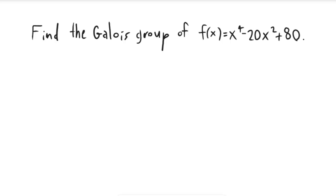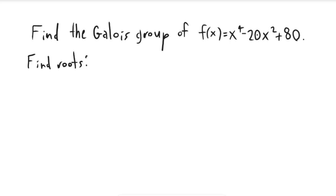In this video, we are going to find the Galois group of the polynomial x to the fourth minus 20x squared plus 80. The first thing we're going to do is find the roots of this polynomial. This is a quadratic polynomial in x squared, so if you think of x squared as being your variable,